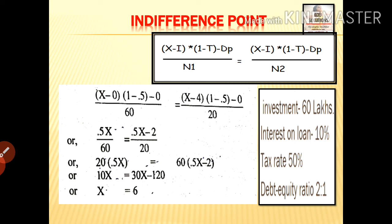Applying the general equation: (x minus i) into (1 minus t) minus dp divided by n1 equals (x minus i) into (1 minus t) minus dp divided by n2.